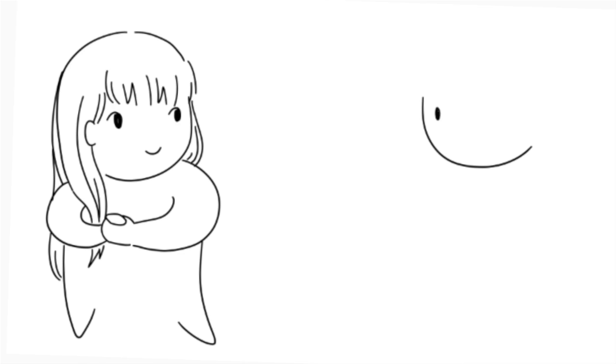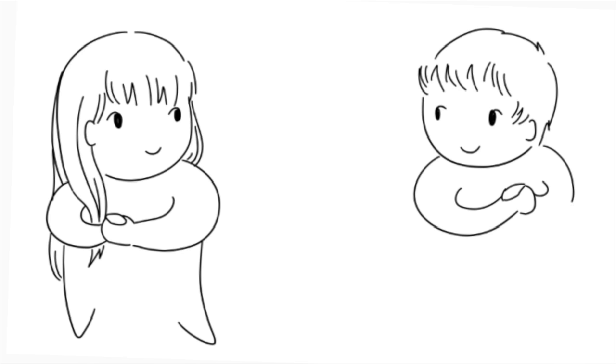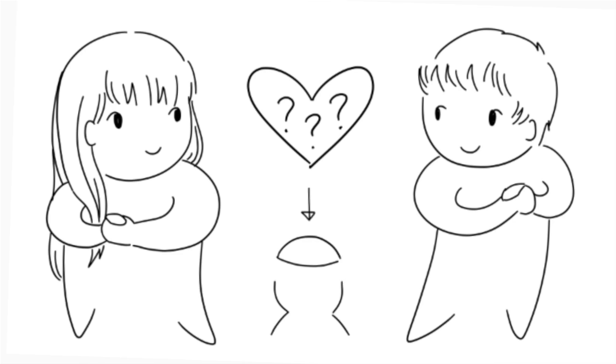Nine signs that you're dating a sociopath. How do you know when you're in a relationship with the wrong person? Sometimes you can't tell when you're in such a relationship as love can often blind you. So here are nine signs to help you identify if you're dating a sociopath.